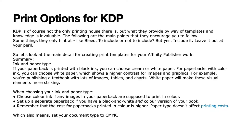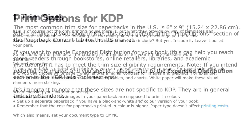When choosing your ink and paper type, choose color ink if any images in your paperback are supposed to print in color. If you have a black and white version and a color version, do two separate versions of the book. Remember that the cost of paperbacks printed in color is higher; paper type doesn't affect printing costs. Also remember to set your document to CMYK — not RGB. You don't want RGB for a print book.